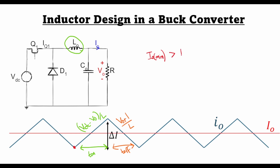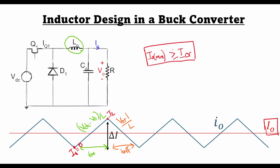The critical load current is the output current when the minimum of the current ripple — let's call this point I1 and this point I2 — becomes equal to zero. At that point the output load current is called the critical load current. If we want to ensure continuous current conduction, then the minimum output current should be greater than or equal to the critical load current.